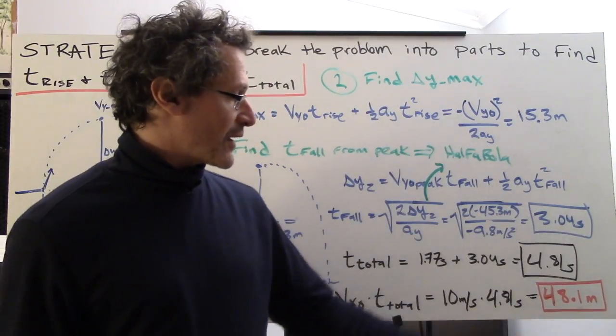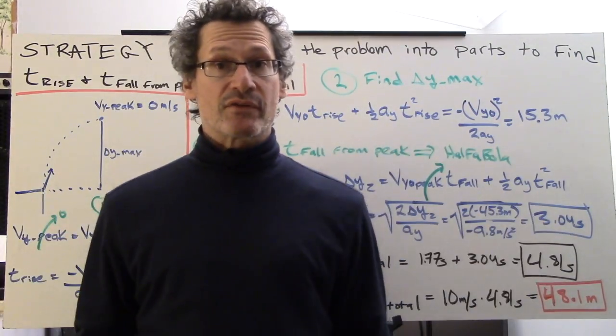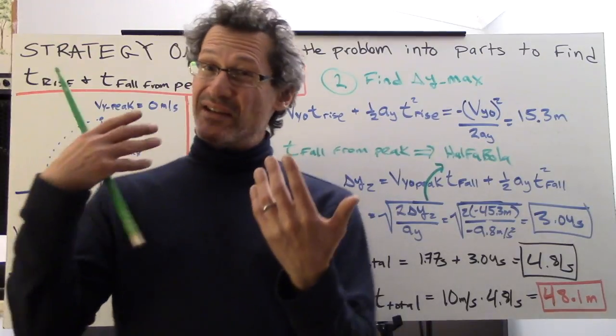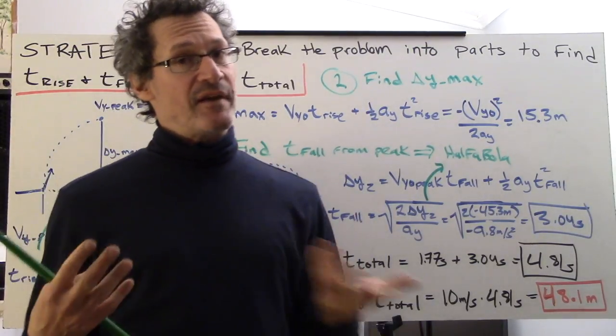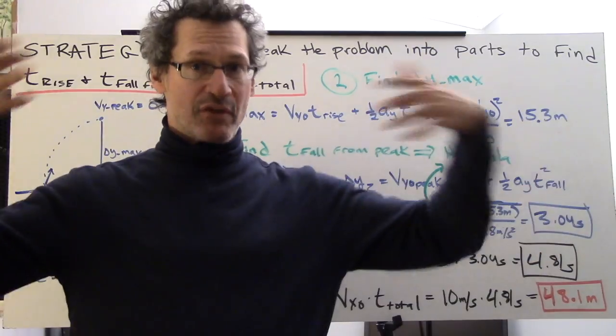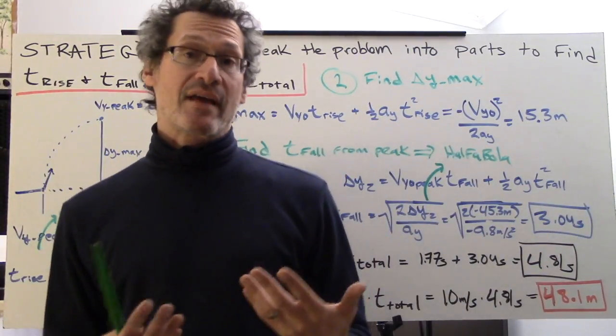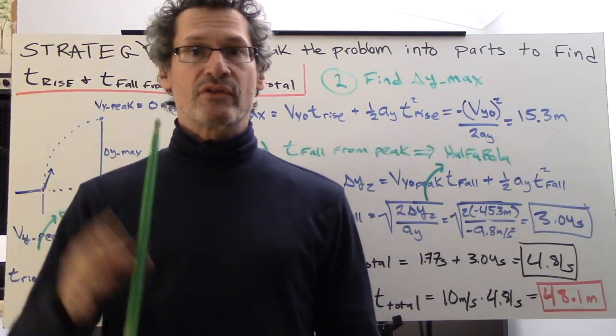So what is delta x, the range? How far did it go? Well, it's v x naught times t total, or 10 times 4.81 seconds, 10 meters per second. We get 48.1 meters. I'm going to show you a way that's actually quicker but involves a little bit fancier math. It's within one step. It's worth seeing. This is three steps; I'm going to condense that into one.